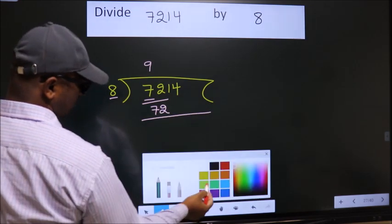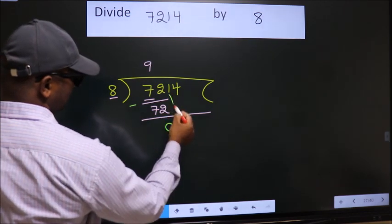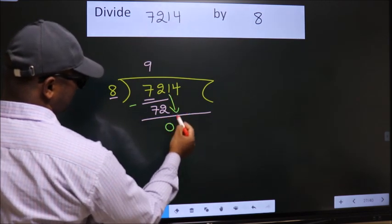Now we should subtract. We get 0. After this, bring down the beside number. So, 1 down.